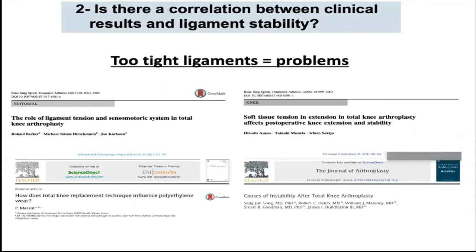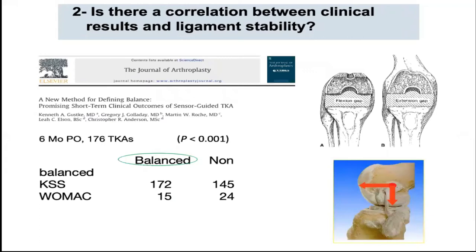On the other hand, persistent pain, joint stiffness, and accelerated wear have all been associated with overtensioning of collateral ligaments. More subtle imbalances may also be linked to unsatisfactory outcomes. Intraoperative ligament tension is usually judged subjectively. Using pressure sensors to assess intraoperative compartment pressure differences showed that balanced total knee arthroplasty had better knee society score and WOMAC score compared to those considered non-balanced.